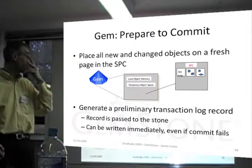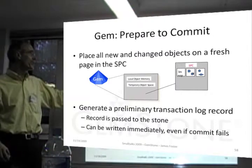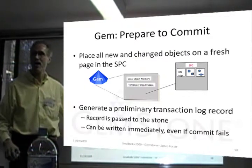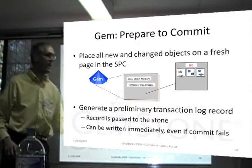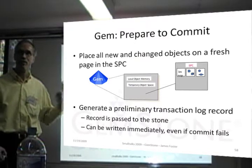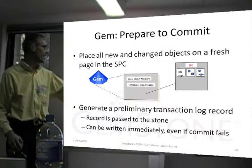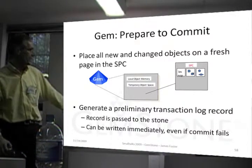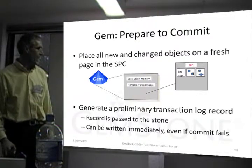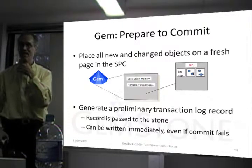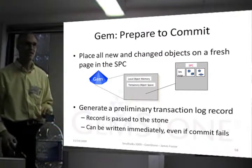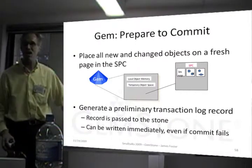So, prepare to commit: place all new and changed objects on a fresh page in shared cache. The gem has some temporary or modified objects. It gets a free frame, it gets a free page, puts that space into the shared page cache, and copies across. It generates a preliminary transaction log record that's passed to the stone. The stone can actually write it immediately, because it will later put in something in the log that says either commit or abort. So we can create the log and write it down.